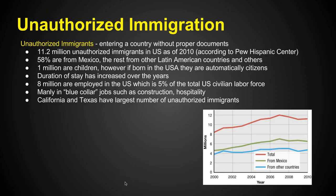Unauthorized immigration is where immigrants enter a country without proper documents. In the United States, there are 11.2 million unauthorized immigrants as of 2010, according to the Pew Hispanic Center. 58% are from Mexico; the rest are from other Latin American countries and around the globe. One million of these are children. If a parent comes over unauthorized and a child is born in the US, that child is automatically a citizen — so over time that population gains influence.